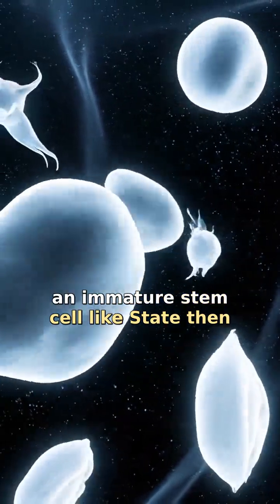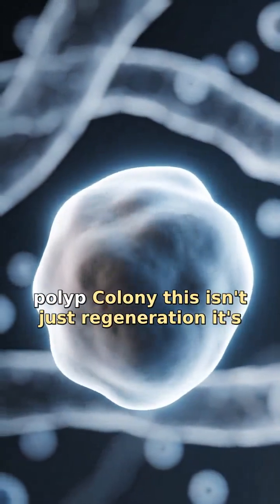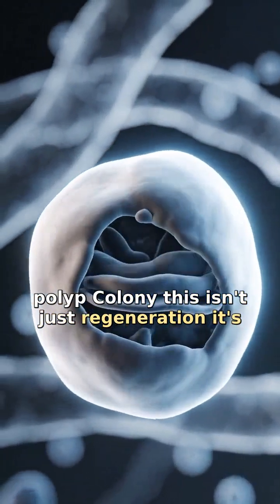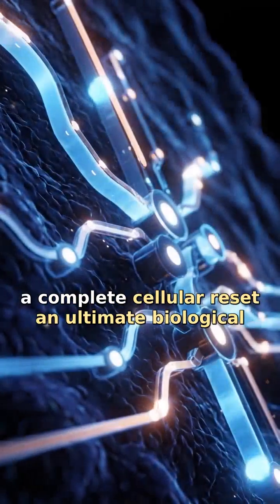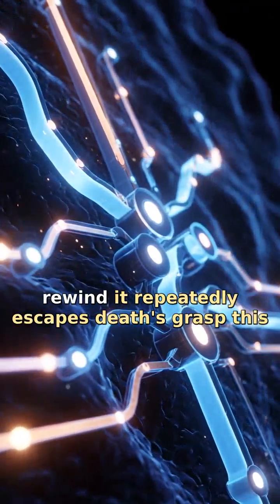Its specialized adult cells revert to an immature, stem cell-like state, then re-differentiate, forming a brand new, youthful polyp colony. This isn't just regeneration, it's a complete cellular reset, an ultimate biological rewind.